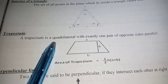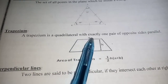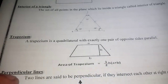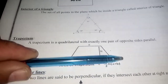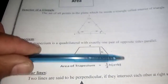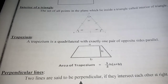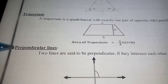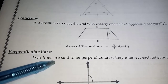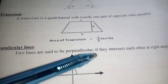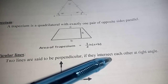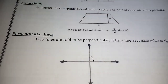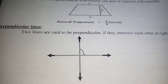What is a trapezium? A trapezium is a quadrilateral with exactly one pair of opposite sides which are parallel. So if in a quadrilateral one pair of sides is exactly parallel, then that quadrilateral is termed a trapezium. Next, perpendicular lines: two lines are said to be perpendicular if they intersect each other at a right angle, which is an angle of 90 degrees.